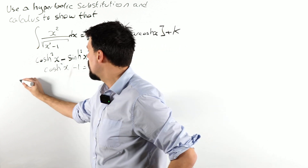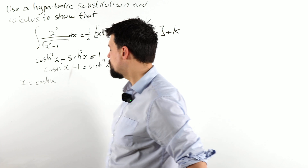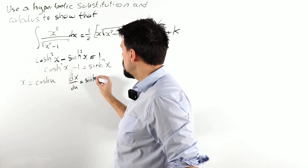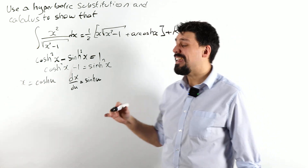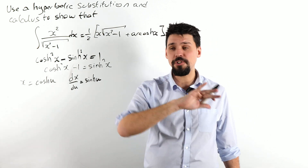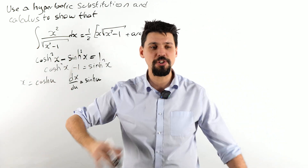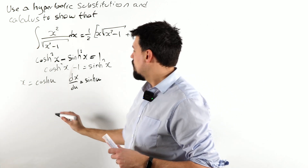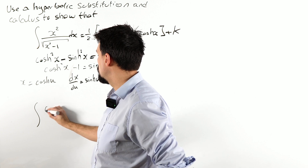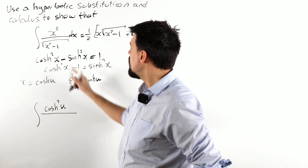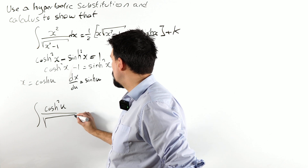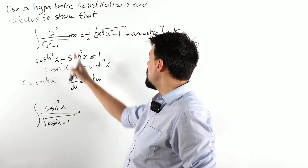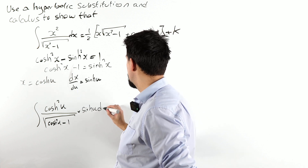We are going to make the substitution x equals cosh(u). We should probably figure out our dx and du. dx/du is sinh(u). What I love about hyperbolic functions is I don't have to worry about minuses when you integrate or substitute — cosh goes to sinh, sinh goes to cosh, back to sinh, to cosh. No minuses to keep track of. Glorious. Let's plug that in.